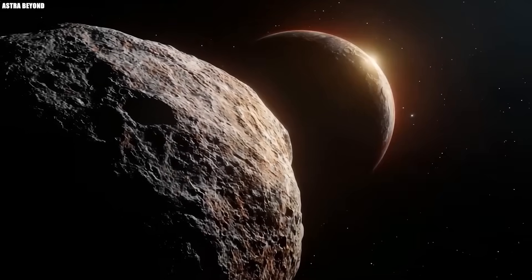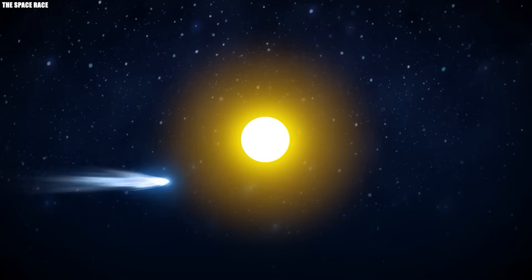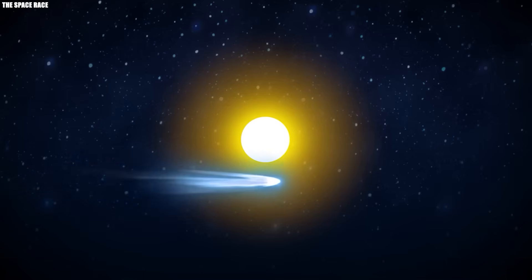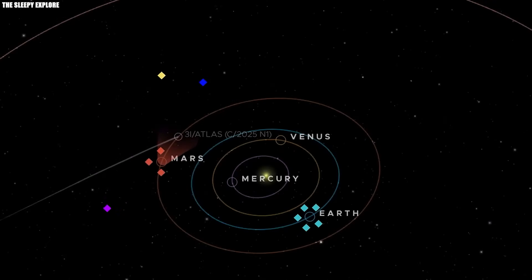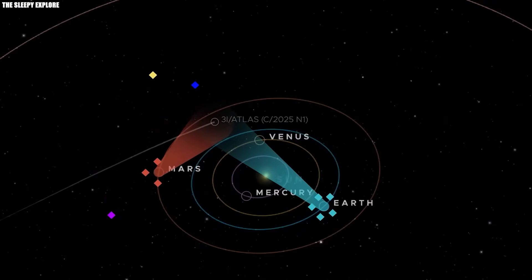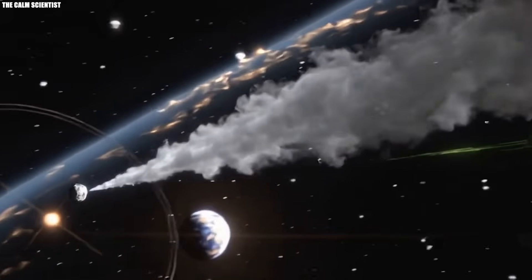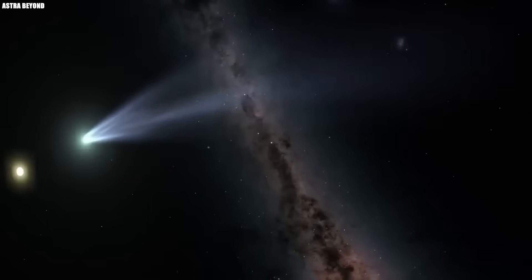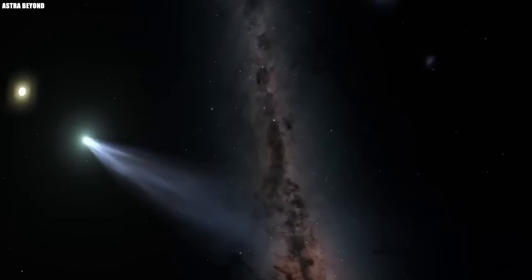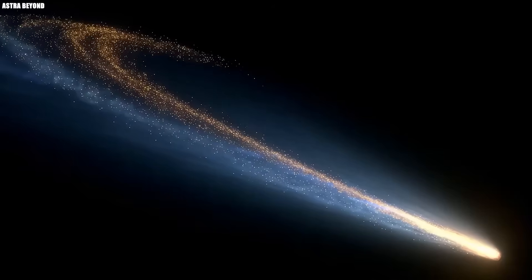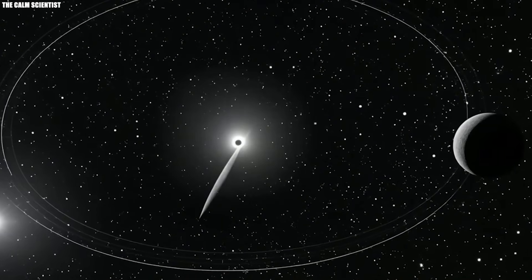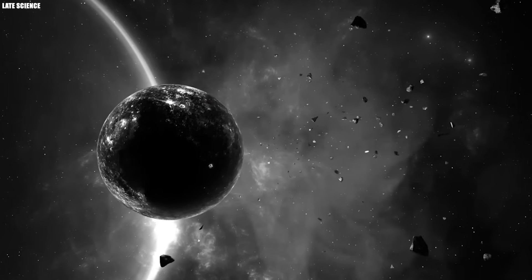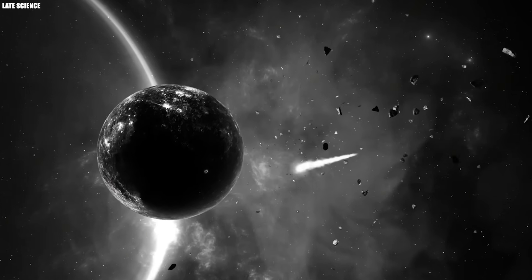3I Atlas is not from around here. The I in its name stands for interstellar. It means this object came from outside our solar system. It is only the third confirmed object of its kind after Oumuamua and Borisov. Its path is not a loop, but a curve that never returns. It entered the solar system on a hyperbolic orbit, which means it is moving too fast to be captured by the sun's gravity. But even among interstellar objects, 3I Atlas is strange.